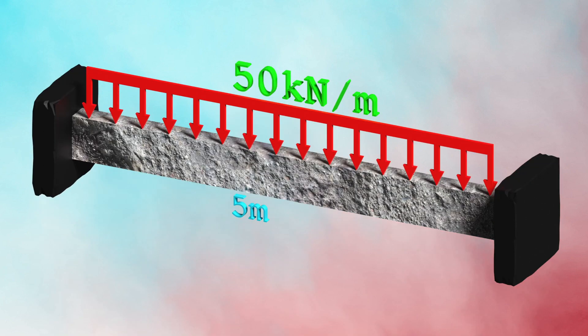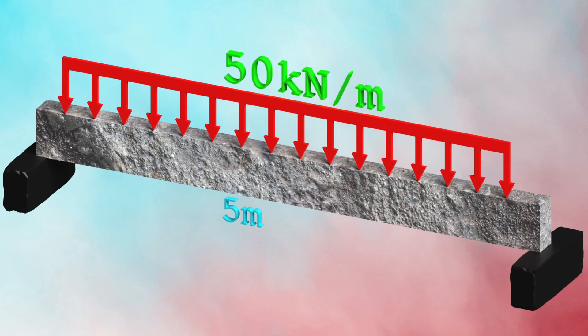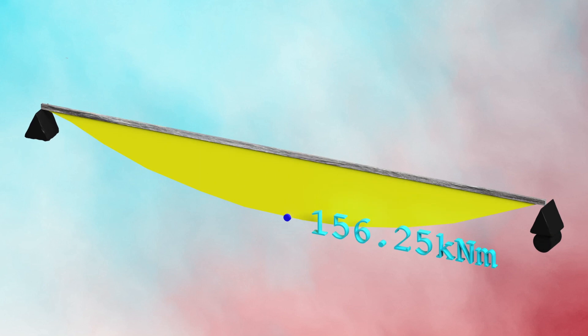Imagine a 5m long beam subjected to a UDL of 50 kN per meter. The bending moment diagram for this fixed beam shows moments of 104 and 52 kNm at the supports and midpoint, using the formulas WL²/12 and WL²/24 respectively. For a simply supported beam under the same load, there is no negative moment at the supports and all the moment is in the tension zone, which is 156 kNm calculated using WL²/8.